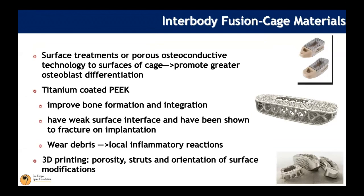New surface treatments and 3D-printed cages are available. Surface coating of PEEK implants with titanium can improve bone formation and integration while maintaining the modulus of elasticity of PEEK. However, some titanium-coated PEEK implants have had weak surface interfaces, can fracture on implantation, and can produce wear debris. 3D-printed cages have a porous 3D architecture that promotes both ingrowth and ongrowth and can improve the biomechanical features of the implant.